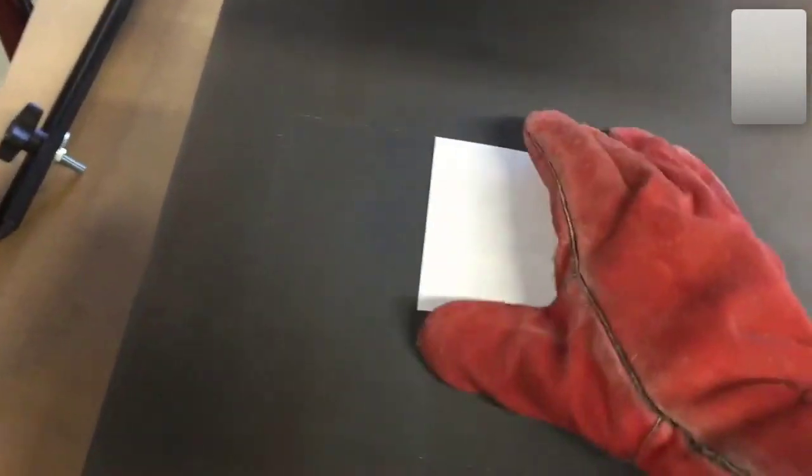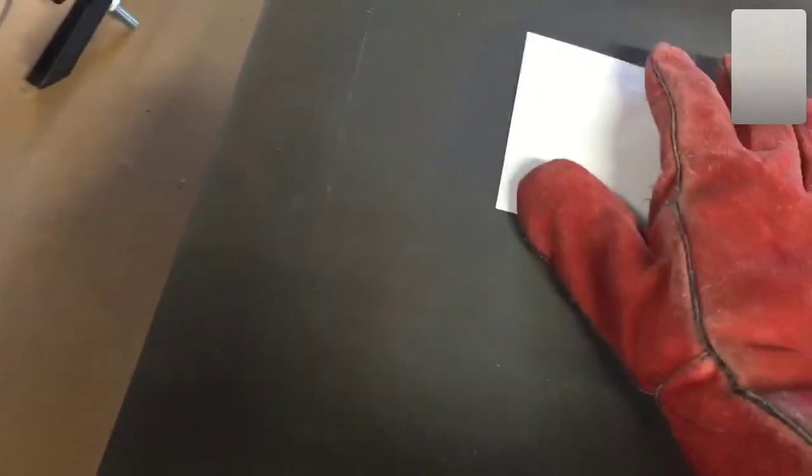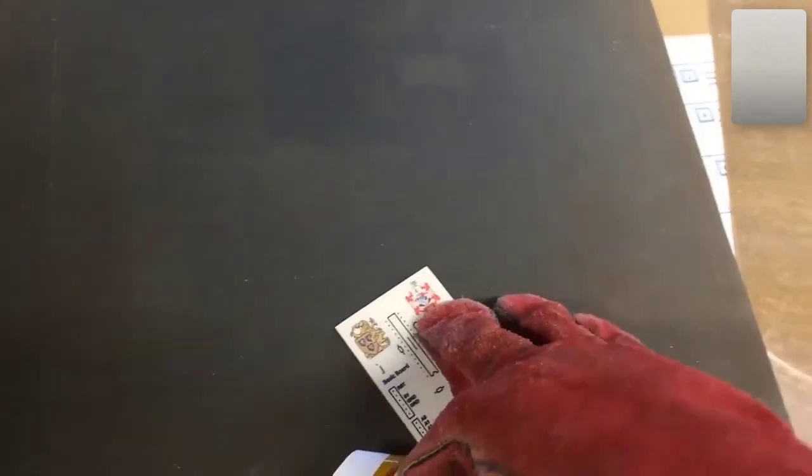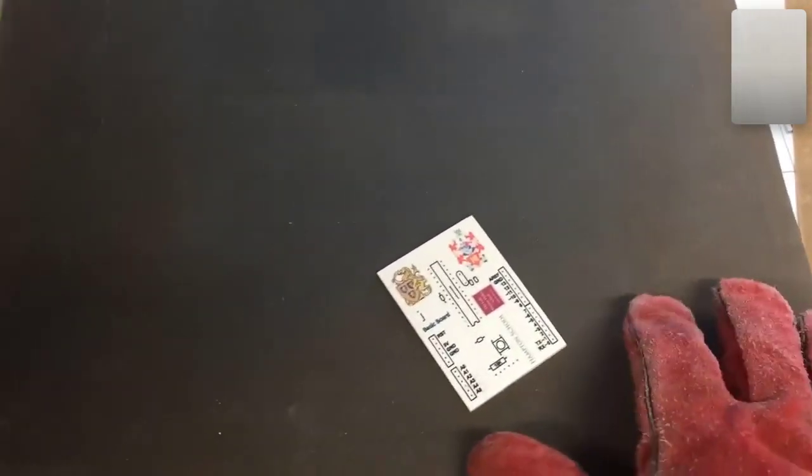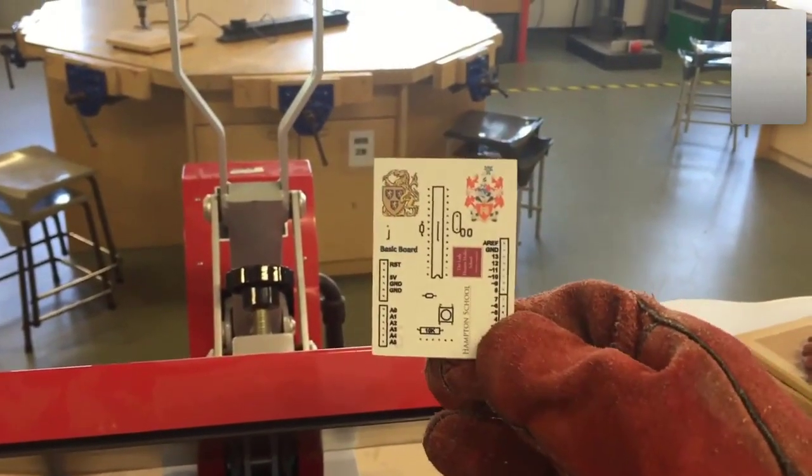It is going to be pretty hot for quite a while, and it's pretty difficult to remove with your gloves on, but once you peel the printed paper away, what you should see is that our image has transferred nicely across onto our printed circuit board.